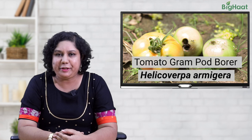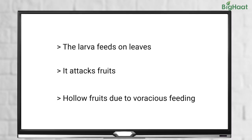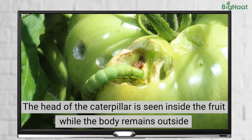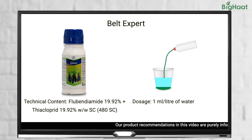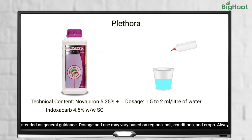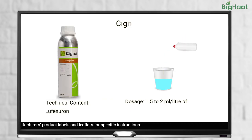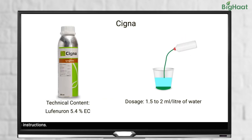Next we have tomato gram pod borer. The larvae feed on the leaves and attack the fruits, causing them to hollow out. While feeding on the fruit, the larvae thrust their head inside the fruit and leave the body on the outside. In fact, a single larva can destroy 2 to 8 fruits. To control the larvae of these pod borers, use 1 ml of Belt Expert in 1 litre of water. You can also use 1.5 to 2 ml of either Plethora or Cigna insecticides mixed in 1 litre of water.